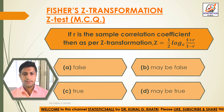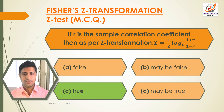Here we have the answer: Option C, True. If R is the sample correlation coefficient, then as per Z-Transformation, Z is equal to half log of (1 plus R) divided by (1 minus R), to the base E.